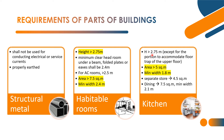Kitchen: minimum height again 2.75 meters, except for portion to accommodate the floor trap of the upper floor — that is the exception, but in any case 2.75 meters is the minimum height. Area of kitchen: it shall not be less than 5 square meters. Minimum width of kitchen: 1.8 meters. Suppose kitchen is provided with a separate store or storeroom — it shall not be less than 4.5 square meters.